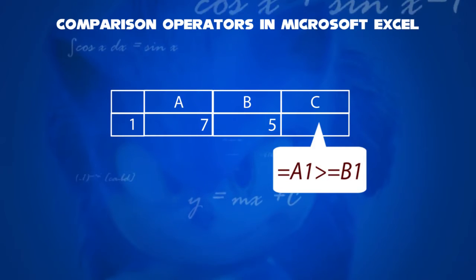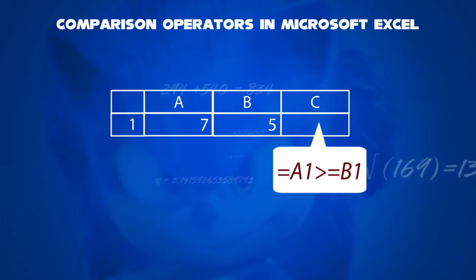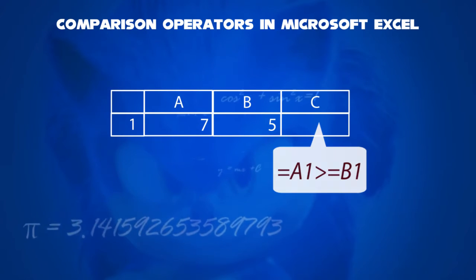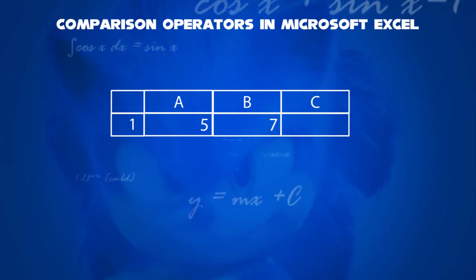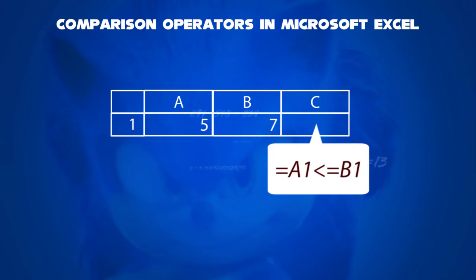Fourthly, greater than or equal to sign. That will be similar to greater than sign like we did in the second one. That is A1 is greater than or equal to B1. Fifth, less than or equal to sign, which is similar to less than sign like we did in the third one. That is A1 is less than or equal to B1.